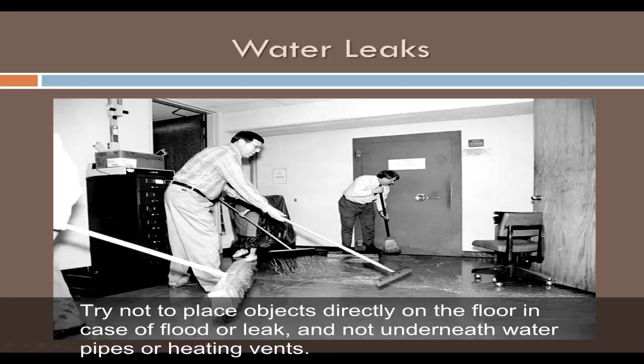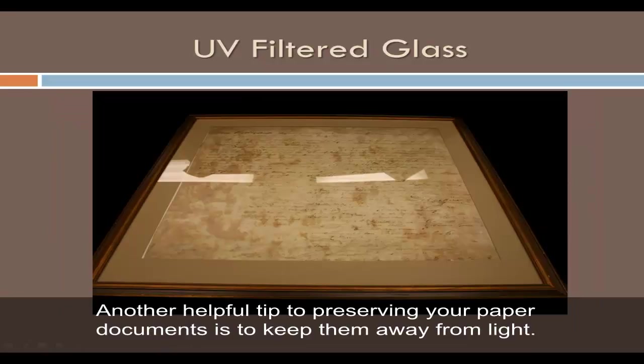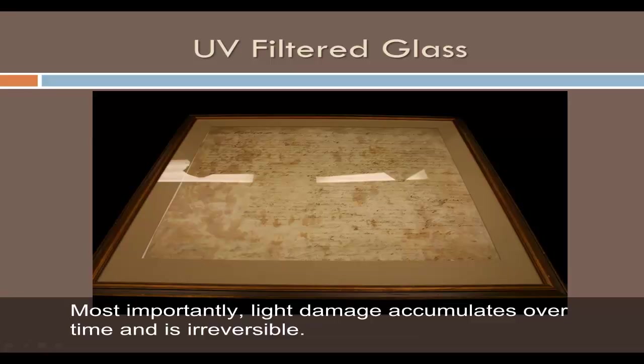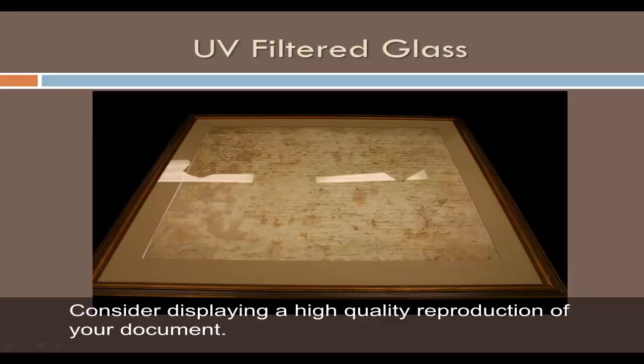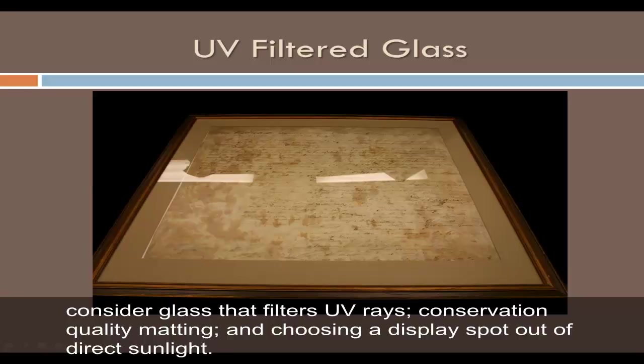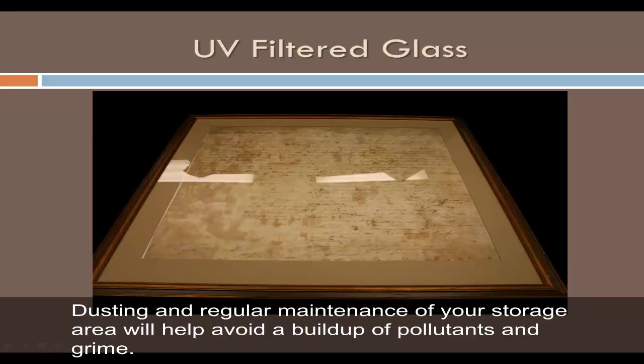Another helpful tip to preserving your paper documents is to keep them away from light. Light accelerates deterioration and can cause darkening and yellowing of paper. Most importantly, light damage accumulates over time and is irreversible. Consider displaying a high-quality reproduction of your document. If you must display the original, consider glass that filters UV rays, conservation quality matting, and choosing a display spot out of direct sunlight. Dusting and regular maintenance of your storage area will help avoid a buildup of pollutants and grime.